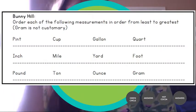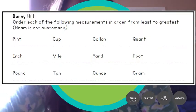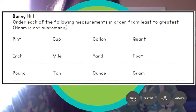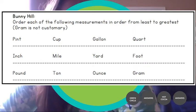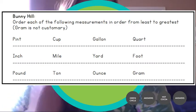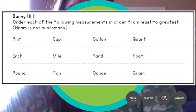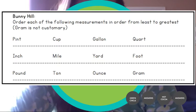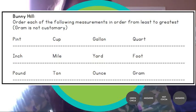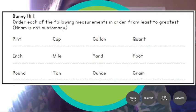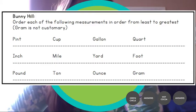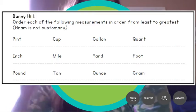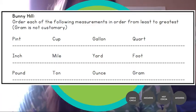So the first thing you're going to do is order each of the following measurements in order from least to greatest. A gram is not customary, just so you know. So take a moment, pause this video, use that prior knowledge. And also remember our song: 28 grams in an ounce, 16 ounces in a pound, 34 ounces in one liter, customary could be easier. Also remember our gallon man, right?